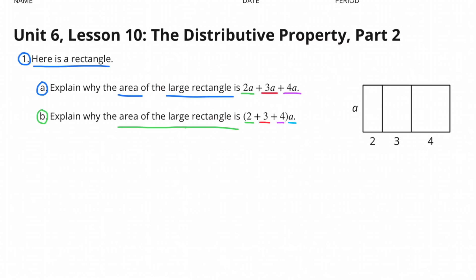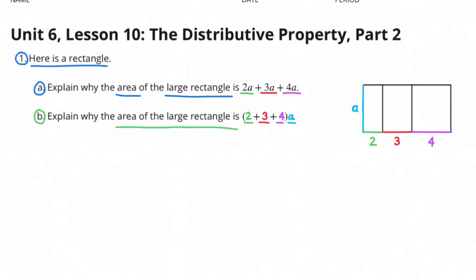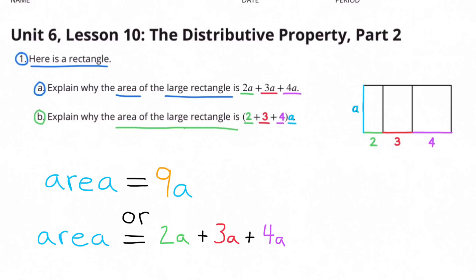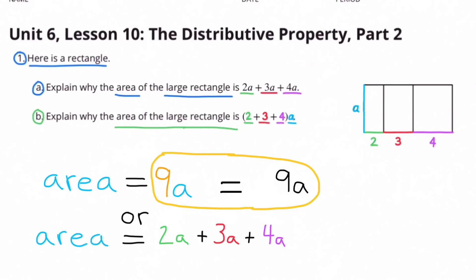When 2 plus 3 plus 4 is inside a set of parentheses, that means the sum of 2 plus 3 plus 4 will be multiplied by A. Since 2 plus 3 is 5 and 5 plus 4 is 9, the sum is 9, so this represents 9 times A. The smaller rectangle's dimensions are 2A, the middle is 3A, and the right is 4A. Adding them all gives 9A, so 2A plus 3A plus 4A equals 9 times A.